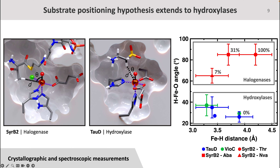What you will see is that the halogenase measurements all group together with more obtuse angles, and the hydroxylase measurements all group together with more acute angles. However, the distance between the iron and the target hydrogen shown on the x-axis does not do a good job of distinguishing the two groups. There just aren't very many points here, because it is very challenging to experimentally isolate the reactive state of halogenases and hydroxylases with the oxo. However, this makes a great question to answer with computational methods, so we set out to use classical molecular dynamics and quantum mechanical calculations to probe this phenomenon.